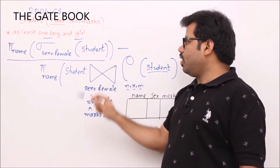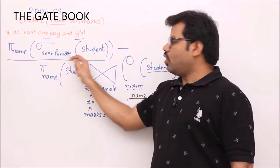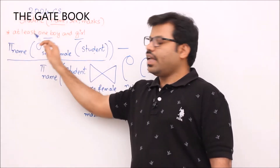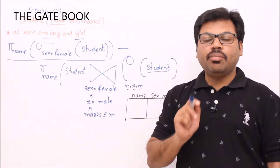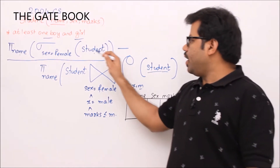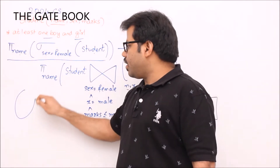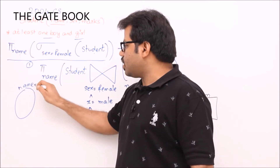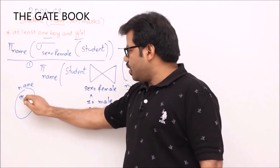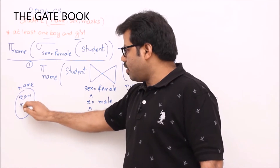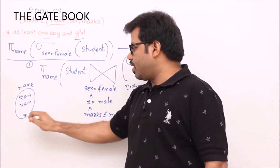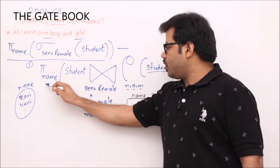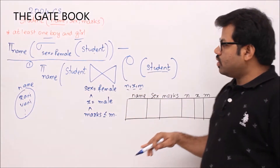Looking at the first part of the query: from the student table, we select where sex equals female, then project name. That means only female students' names are printed. So this first sub-result is a collection of names of female students.